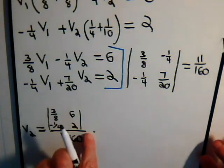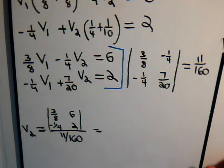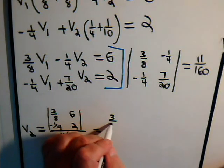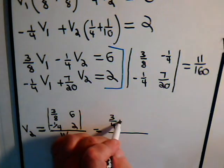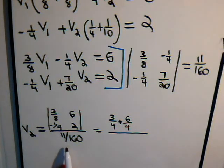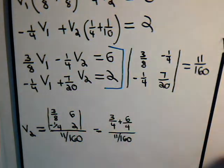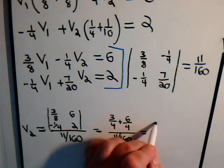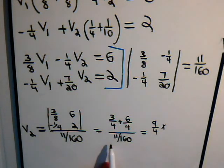So what is V2? This would be equal to, here we have 2 times 3/8, so that would be 6/8, or that's 3/4. And here we have minus negative 6/4, or that would be plus 6/4 divided by 11 over 160.